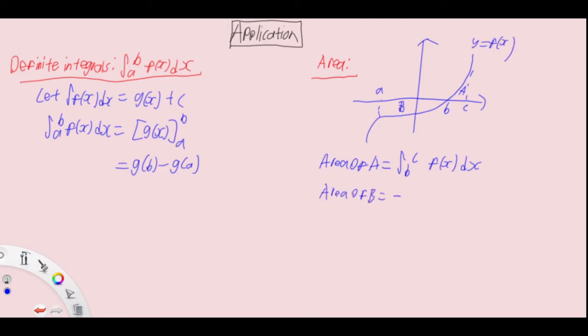We can also apply the negative sign to integrate from b to a without the negative sign. If area C is between the curve and y-axis, find the function in terms of y, which is f inverse y, then integrate from d to e.